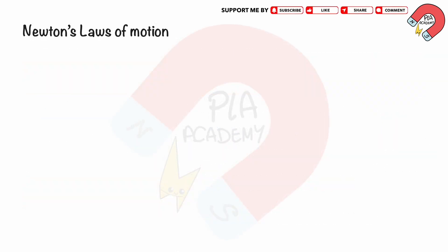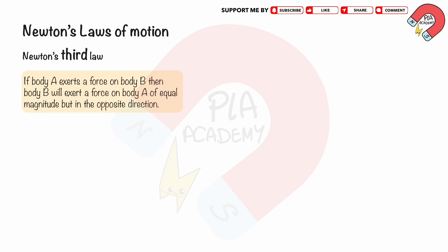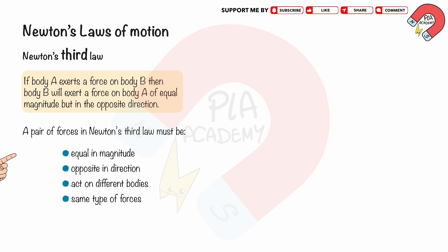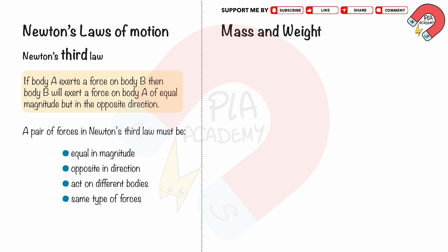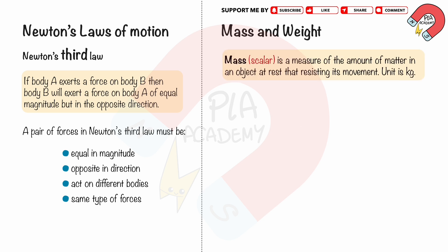Newton's Third Law of Motion states that if body A exerts a force on body B, then body B will exert a force on body A of equal magnitude but in the opposite direction. We can conclude that a pair of forces in Newton's Third Law must be equal in magnitude, opposite in direction, act on different bodies, and be the same type of force.